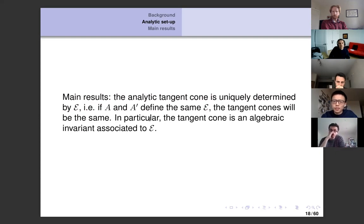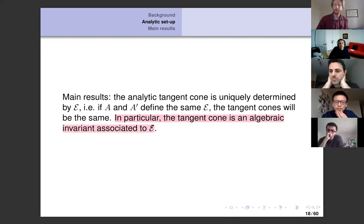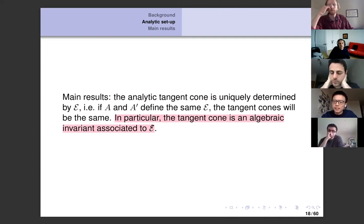The main result is that the analytical tangent cone turns out to be uniquely determined by E. That means if you have two admissible Hermitian-Yang-Mills connections defining the same sheaf E, the tangent cones will be the same. This means the tangent cone is an algebraic invariant associated to E.